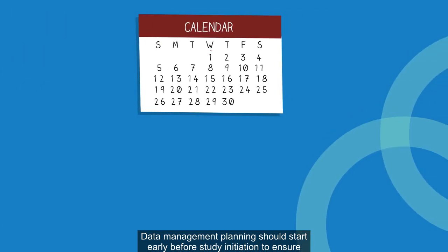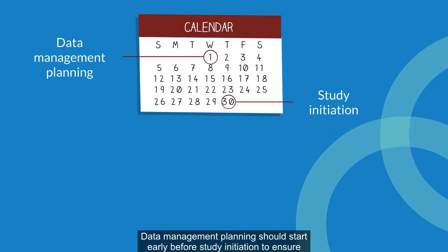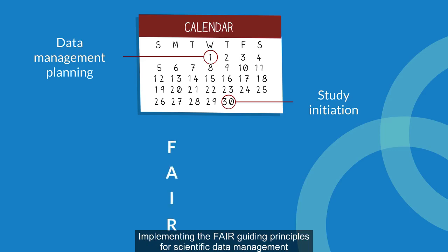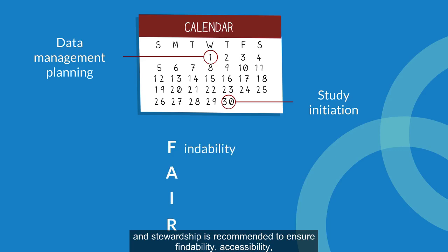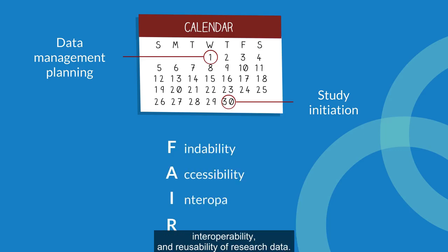Data management planning should start early, before study initiation, to ensure best practice guidelines are defined and adhered to from the beginning. Implementing the FAIR guiding principles for scientific data management and stewardship is recommended to ensure findability, accessibility, interoperability, and reusability of research data.